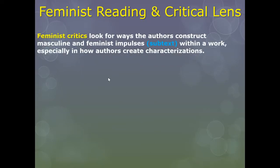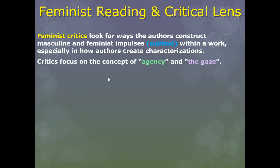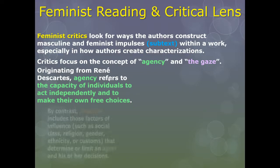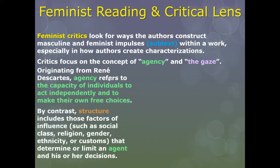When feminist critics use theory to look at literature and film, they look for how authors construct masculine and feminine impulses, especially in characterization. Critics focus on the concept of agency and the gaze. Agency originates from Rene Descartes and refers to the capacity of individuals to act independently and make their own free choices. By contrast, structure includes factors such as social class, religion, gender, and ethnicity that limit people's mobility and agency.